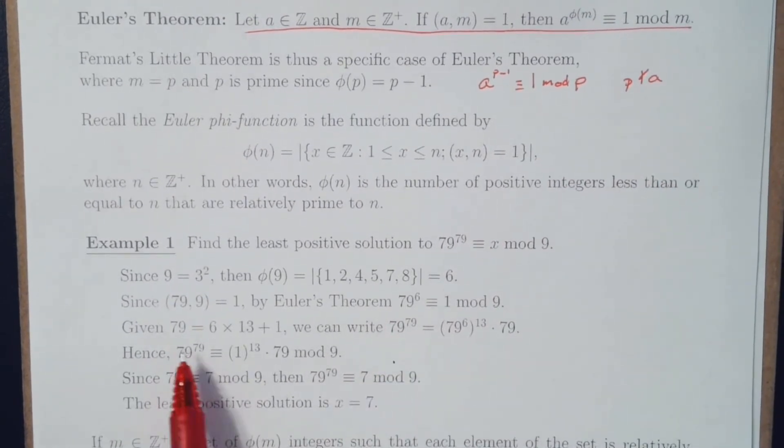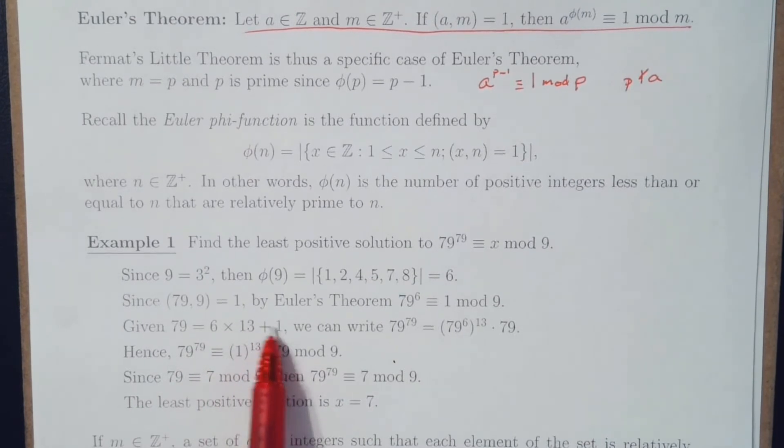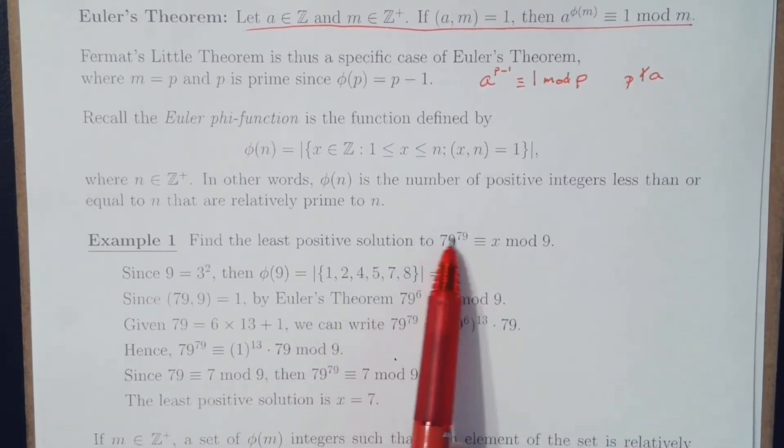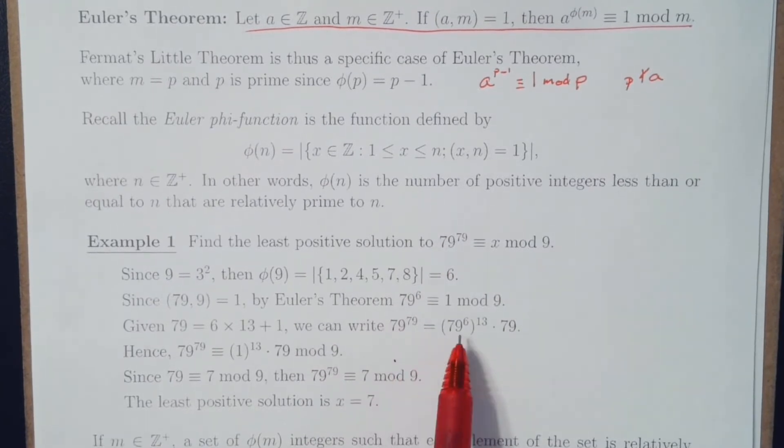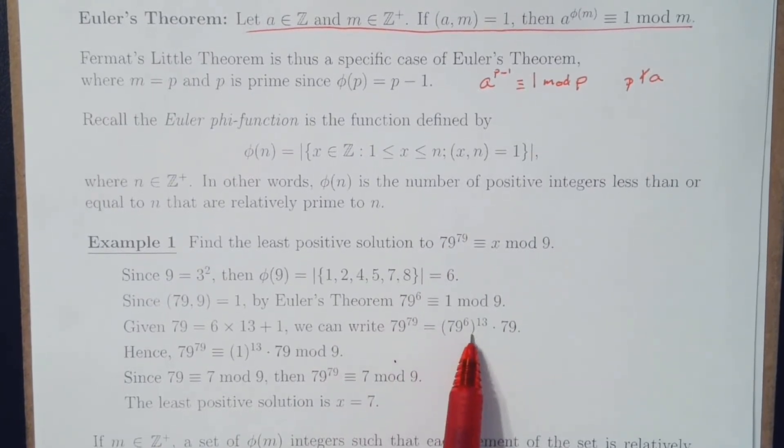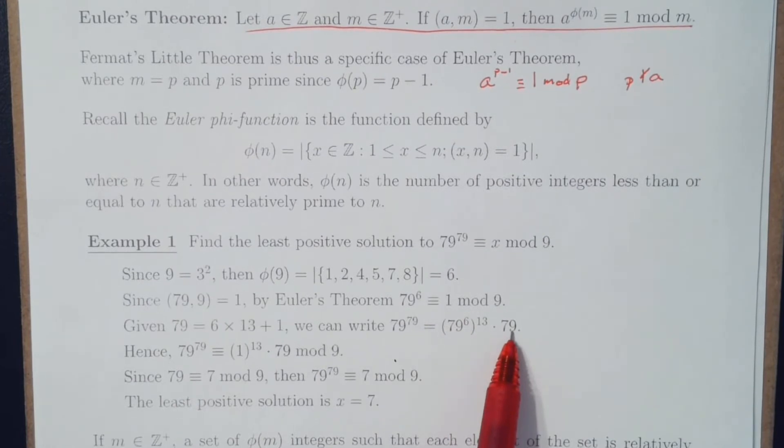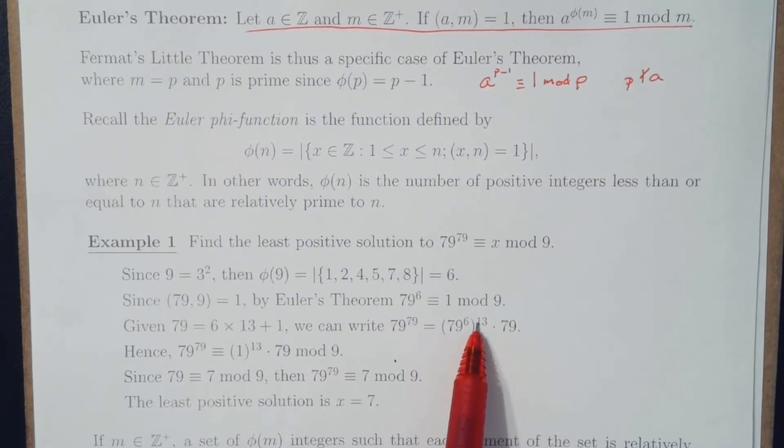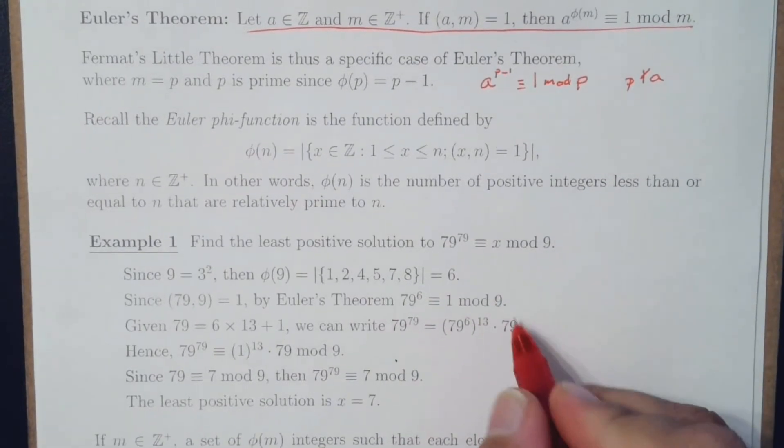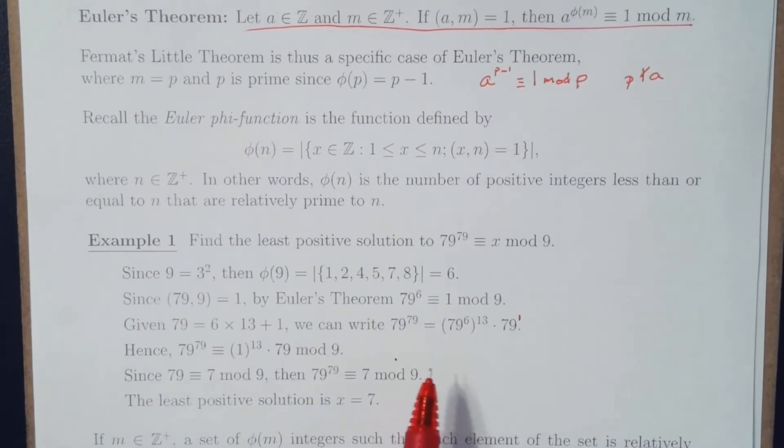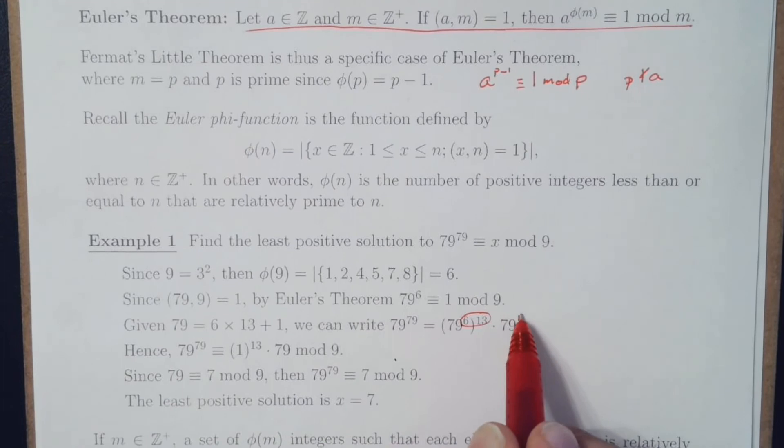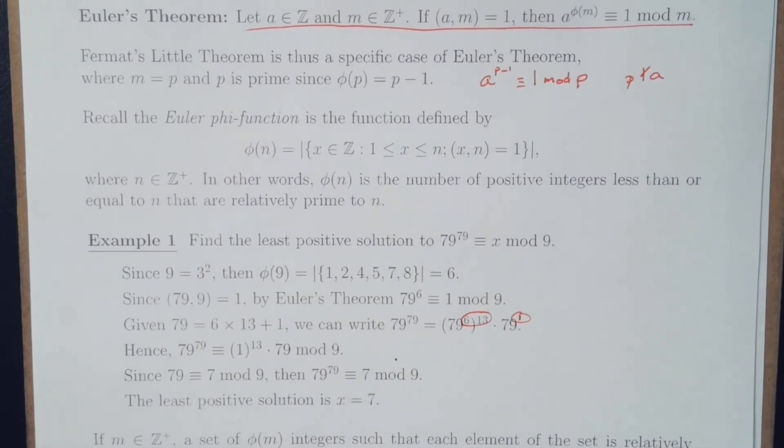Now, given that 79 is 6 times 13 plus 1, we can write 79 to the 79th power as 79 to the sixth power raised to the 13th power times 79. Because a power to a power is multiplied, 6 times 13 is 78, and then the implied one gives us the 79 powers.